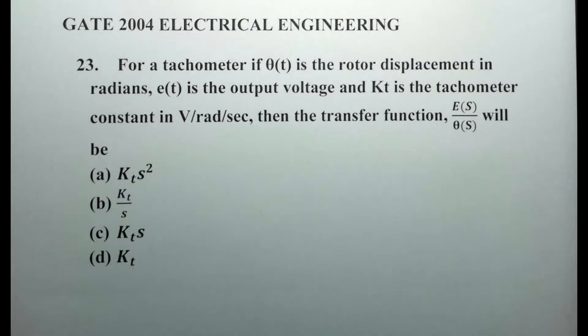Here's the next question, number 23. For a tachometer, if theta of t is the rotor displacement in radians, e of t is the output voltage, and kt is the tachometer constant in volts per radian per second, then the transfer function e of s by theta of s will be given as...